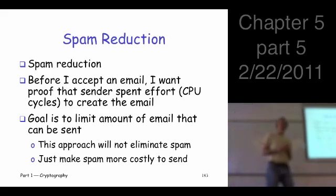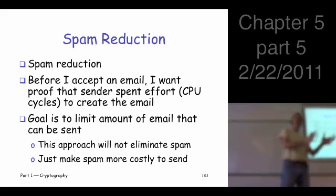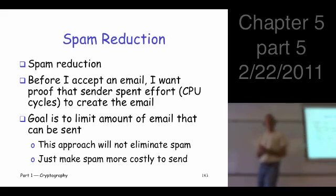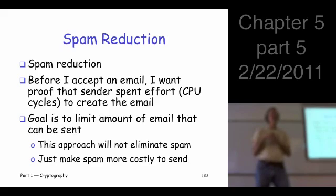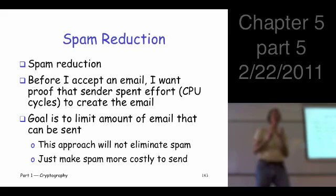Our original motivation for looking at the hash was digital signatures. We don't sign the message itself — instead we sign the hash of the message. Why? Because signing the message is computationally intensive. It's very expensive to do a public or private key operation, so we compress it down to something small and sign that hash. That's why we have all these demanding properties on cryptographic hashes, because we're using it in this vital cryptographic application. If people can find collisions, they can break our signature scheme through the hash function.